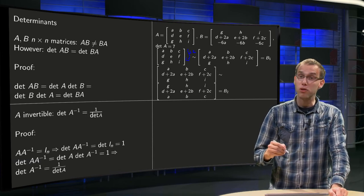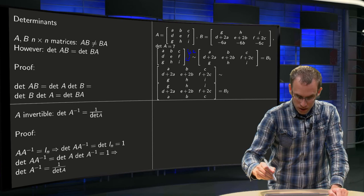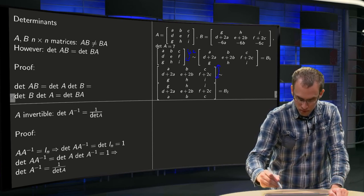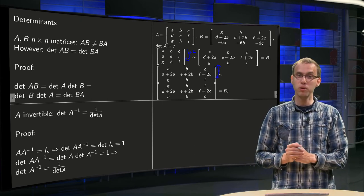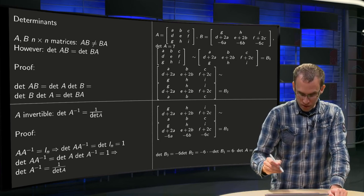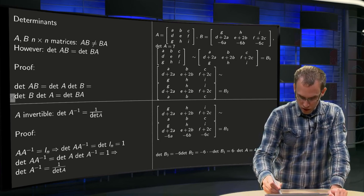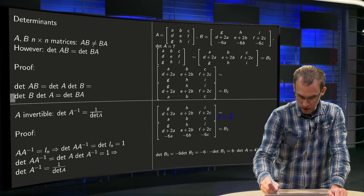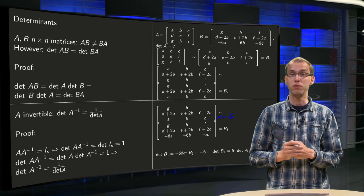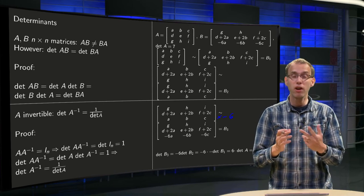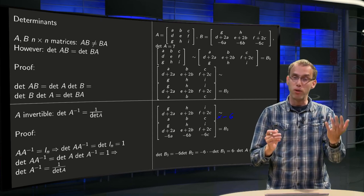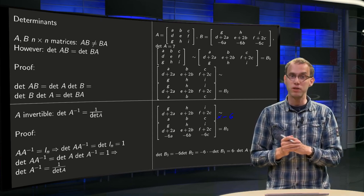we have to change the first and the third row, and then we get to B2, and we see we are almost at B. And if we multiply this last row by minus 6, we are at B3, and you see that the matrix B3 equals matrix B. So by three operations, the three row operations, we can get our B from our A. So what happens with the determinant?